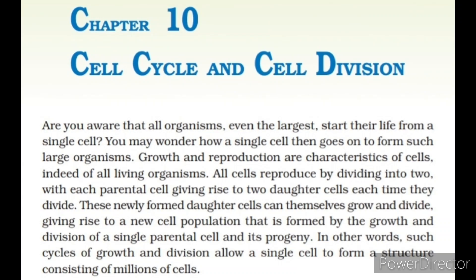Chapter 10: Cell Cycle and Cell Division. Are you aware that all organisms, even the largest, start their life from a single cell? Growth and reproduction are characteristics of cells, indeed of all living organisms. All cells reproduce by dividing into two, with each parental cell giving rise to two daughter cells each time they divide. These newly formed daughter cells can themselves grow and divide, giving rise to a new cell population formed by the growth and division of a single parental cell and its progeny. Such cycles of growth and division allow a single cell to form a structure consisting of millions of cells.